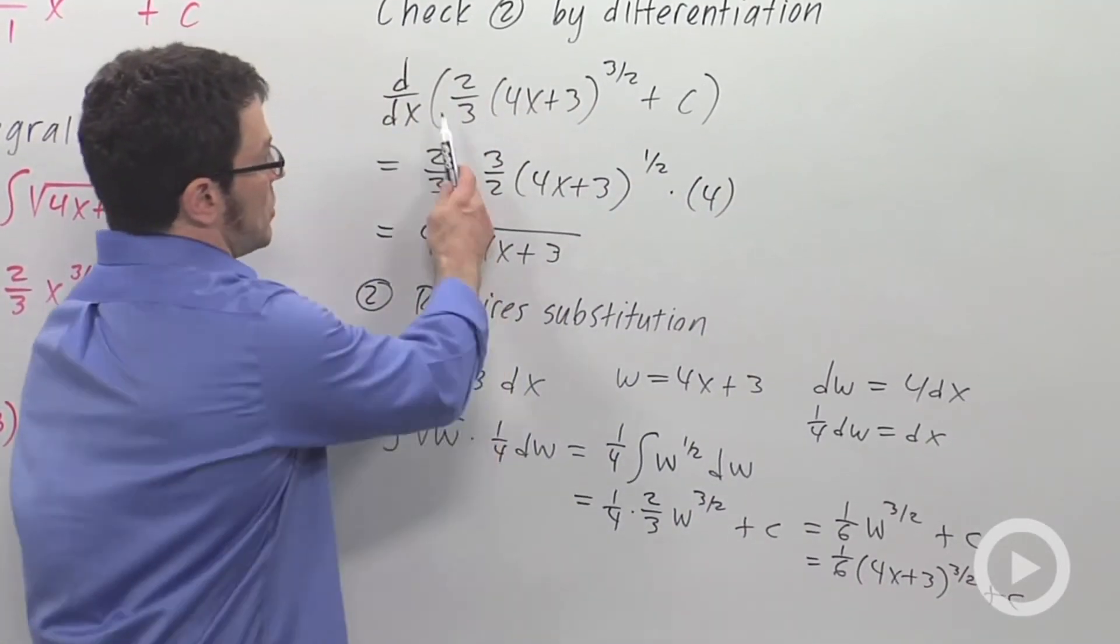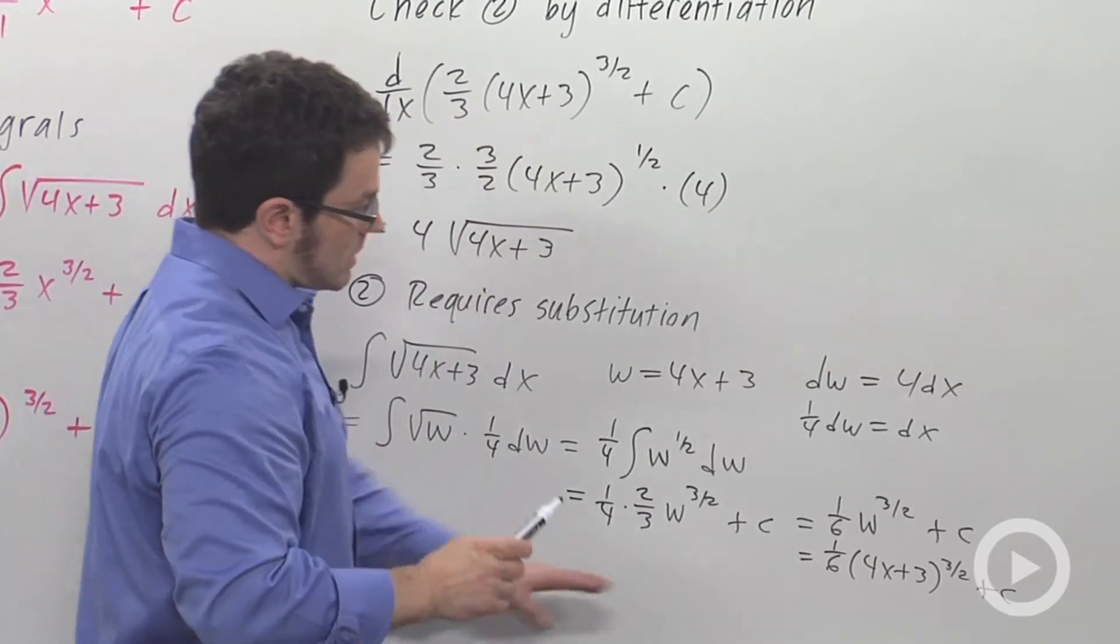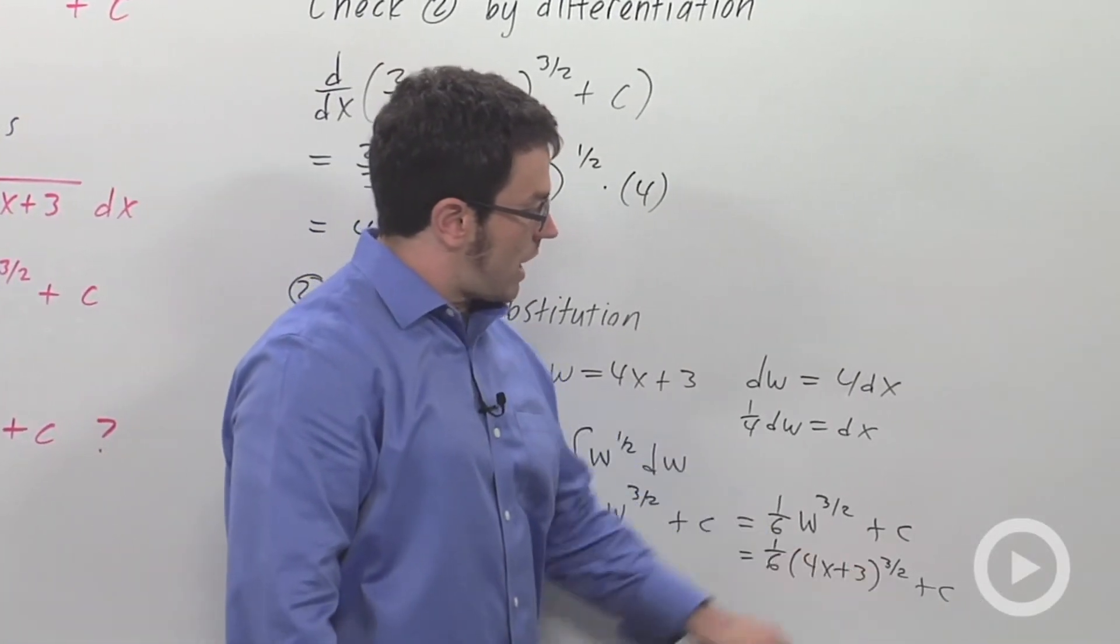Not exactly the same as the 2 thirds that I thought it was before. This is the correct answer, 1 sixth 4x plus 3 to the 3 halves plus c.